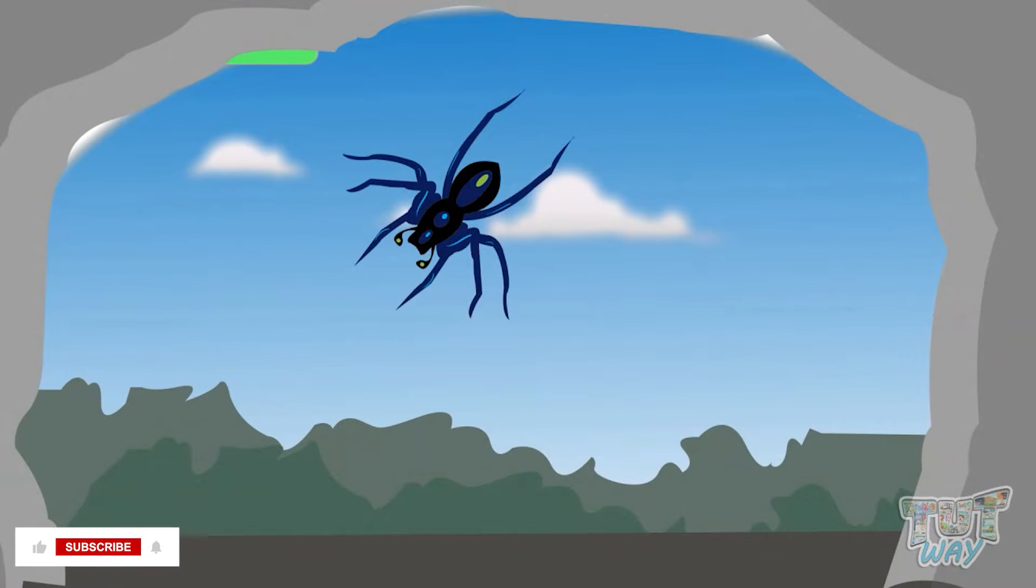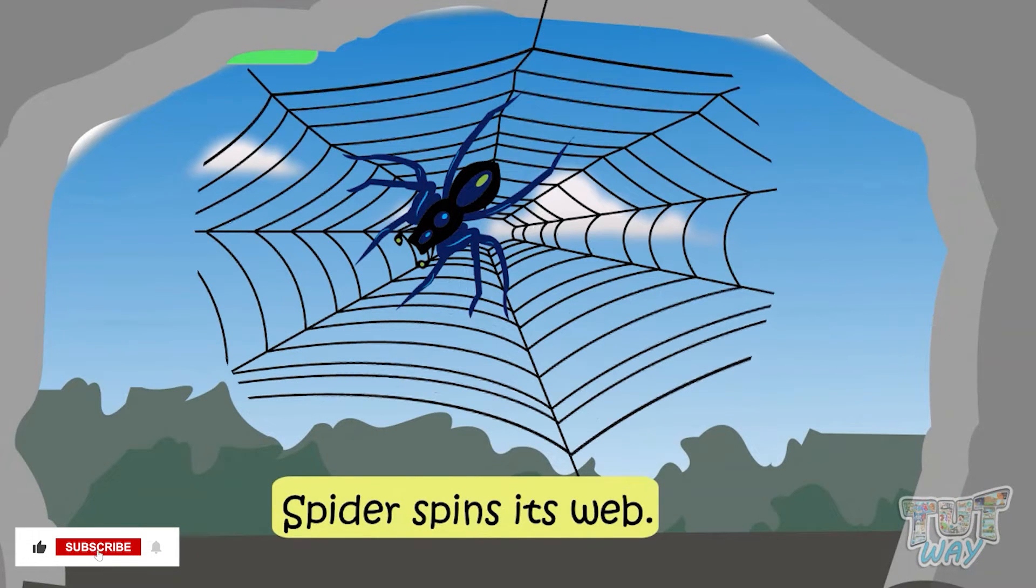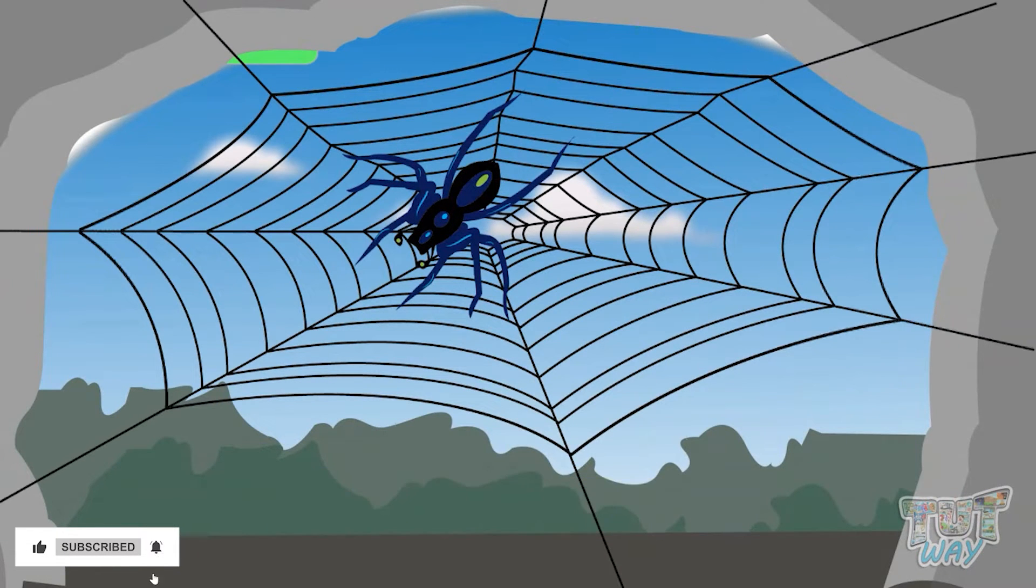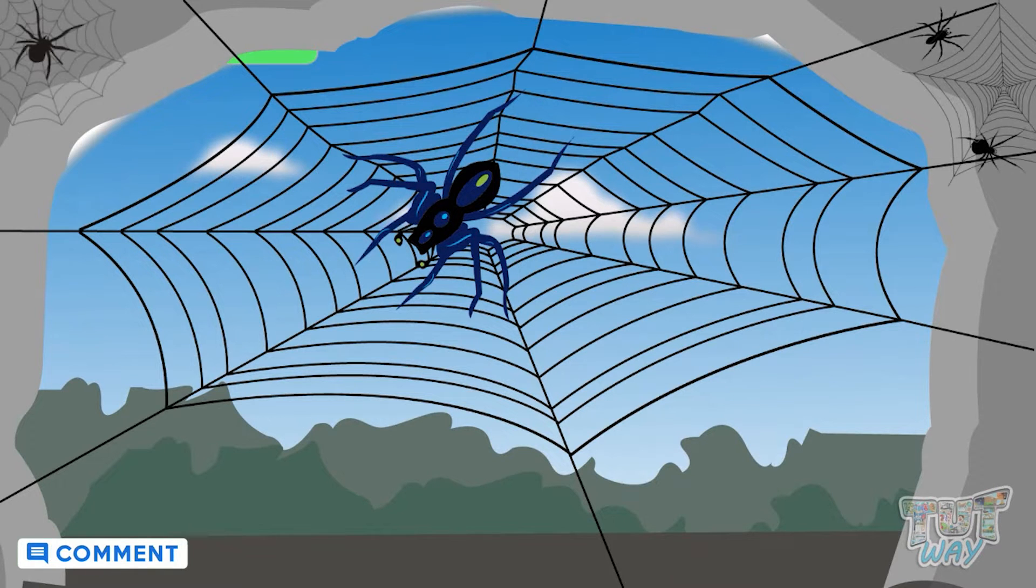A spider spins its web. It makes its web with the help of a sticky material produced by its own body. Different types of spiders spin different webs.